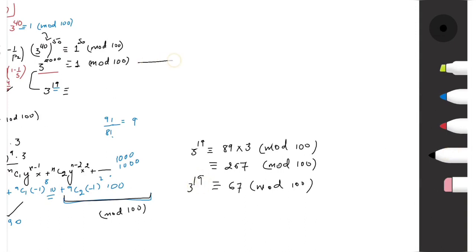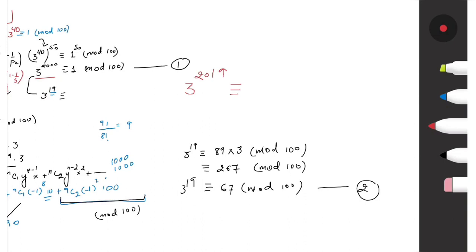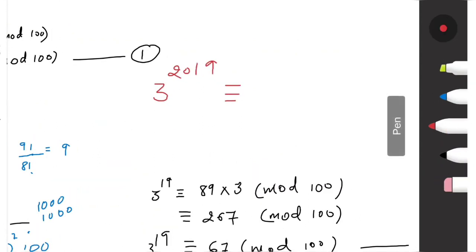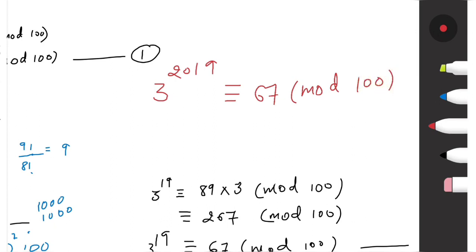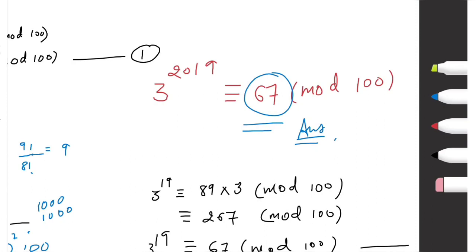Now multiplying both congruences: 3^2000 ≡ 1 (mod 100) and 3^19 ≡ 67 (mod 100), so 3^2019 ≡ 67 × 1 = 67 (mod 100). The last two digits of 3^2019 are 67. I hope you understood the method — for any queries, let me know in the comment section. Thank you.